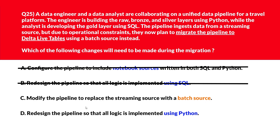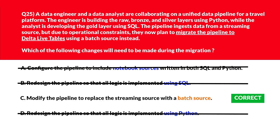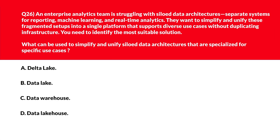We'll move to D. D says redesign the pipeline so that all logic is implemented using Python. A Python-only rewrite is unnecessary and doesn't address the ingestion source change. Option C is the right answer.